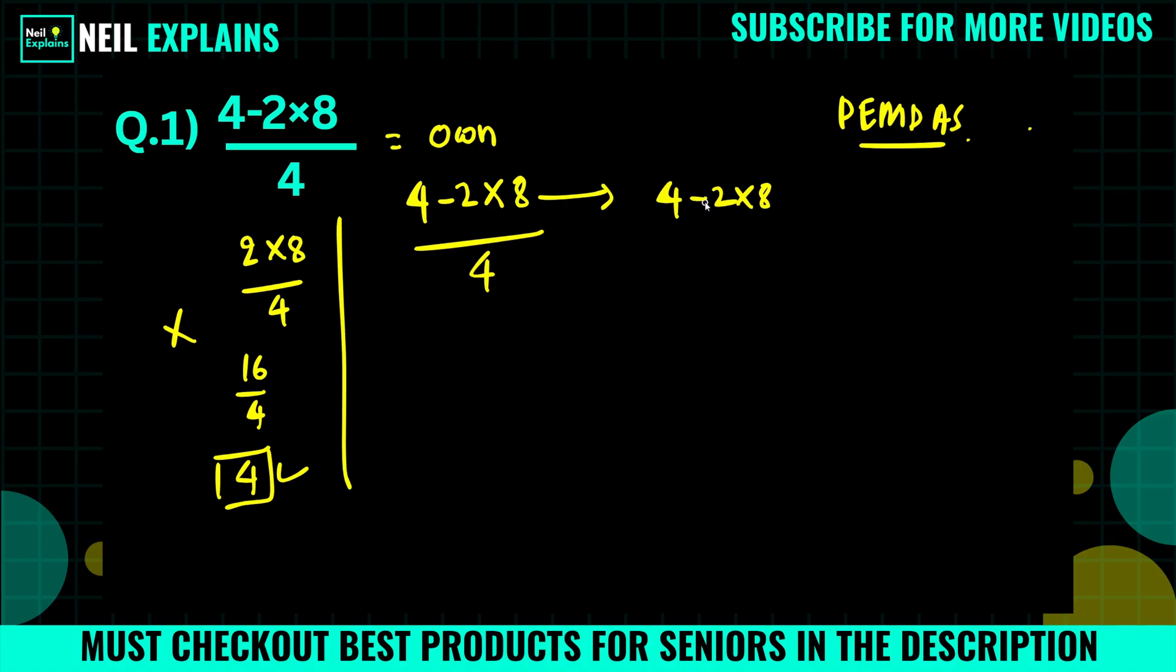So what we have: multiplication and subtraction operations are there. And according to PEMDAS, multiplication operation will be given priority first. So we will solve for this part. So again, 4 minus 8 times 2, that is equal to 16. And 4 minus 16 is nothing but minus 12.